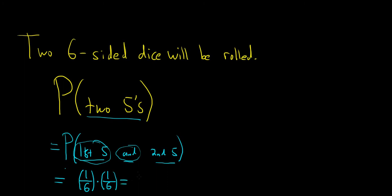So you multiply across. One times one is one. Six times six is thirty-six. And that is the final answer. I hope this video has been helpful.